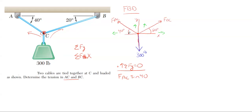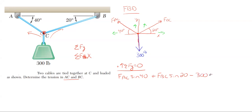Since the angle is measured off the x-axis, cosine deals with the adjacent side and sine deals with the opposite side - so the y-component uses sine of 40. Then we have plus FBC, since the y-component of BC is also upward, times sine of 20 degrees, because again the angle is off the x-axis and y is opposite that angle. Lastly, we subtract 300 pounds, and all of that must equal zero.